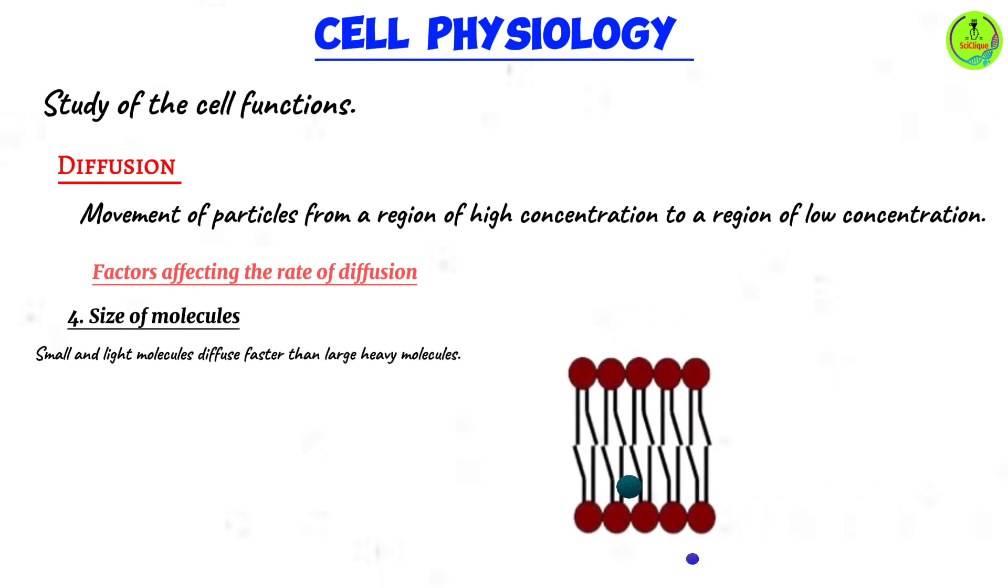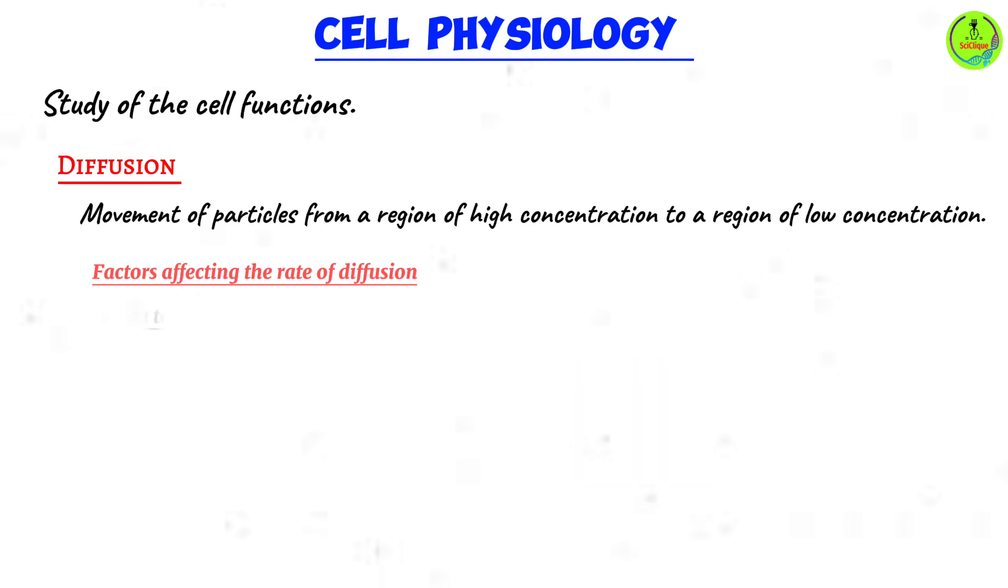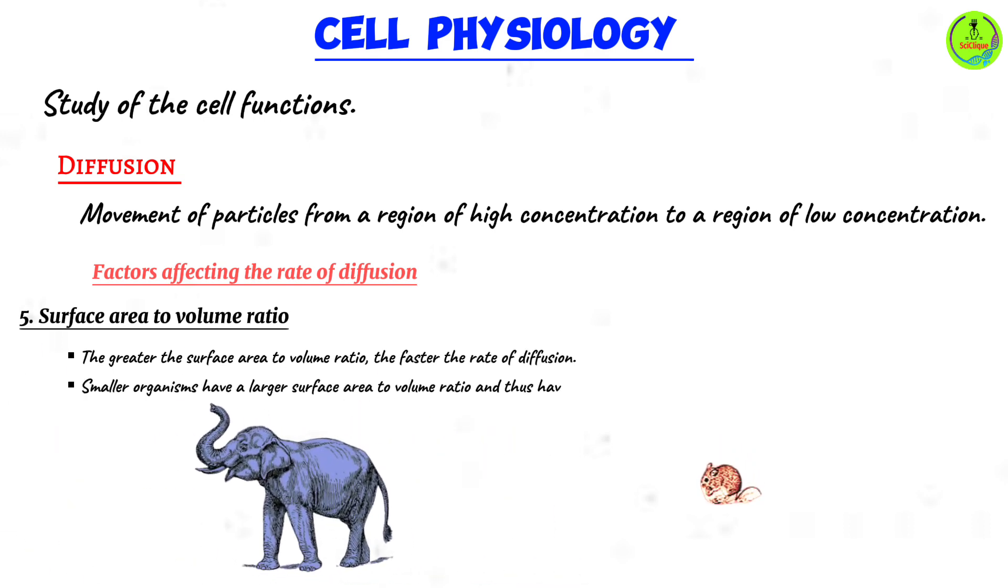Surface area to volume ratio. The smaller the organism, the larger the surface area to volume ratio. The bigger the organism, the smaller the surface area to volume ratio. Let's put that into context by using an example. Let's imagine we have two animals: a mouse and an elephant. Of course, one is small, quite small, and the other is quite big.